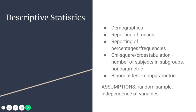Descriptive statistics are things like demographics, just reporting means, percentages, and frequencies — for example, how many counselors say they're happy with the amount of supervision they've received, so 73% of counselors say they are satisfied. Chi-square and cross-tabulation can also be used to show a number of subjects within a certain subgroup, and that's nonparametric.